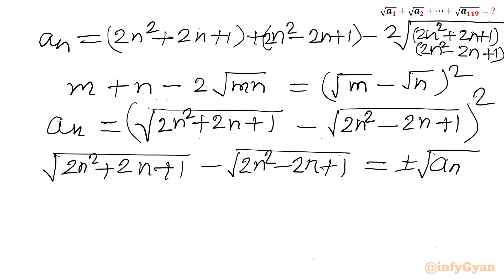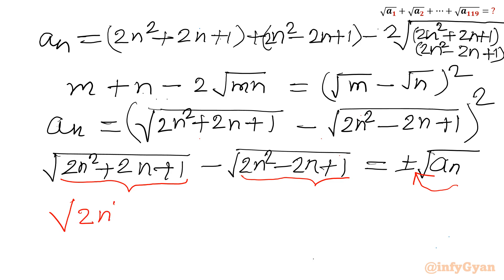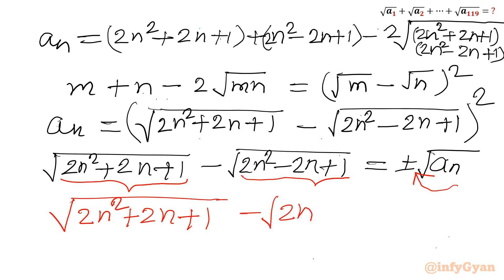Therefore we take the positive sign: √aₙ = √(2n² + 2n + 1) − √(2n² − 2n + 1). Now we will plug in n = 1, 2, 3, up to 119. So √aₙ = √(2n² + 2n + 1) − √(2n² − 2n + 1).